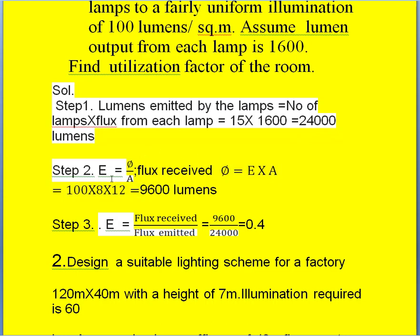Second step: calculate illumination. The formula is illumination equal to flux received divided by area of the surface to be illuminated. From this, flux received phi equals illumination E into area A. Illumination is given and the room dimensions are given. So 100 into area 8 into 12 gives 9600 lumens. This is the flux received by the surface.